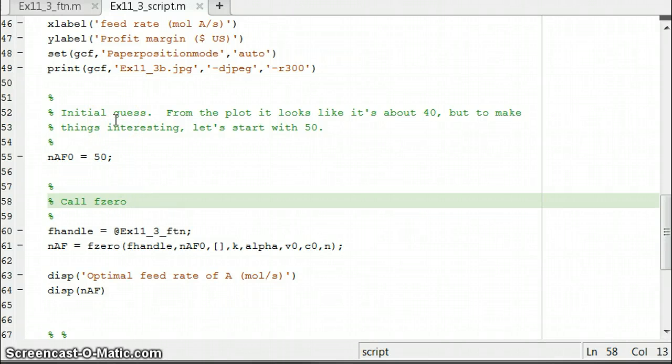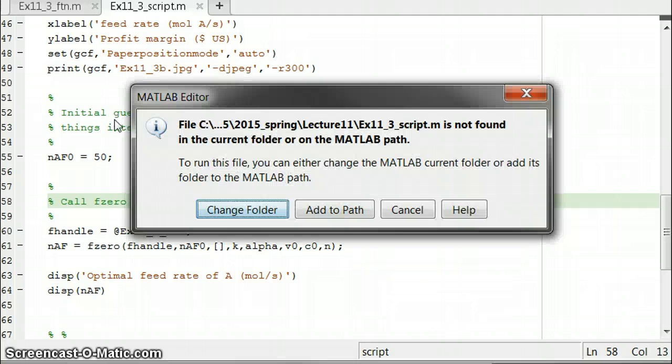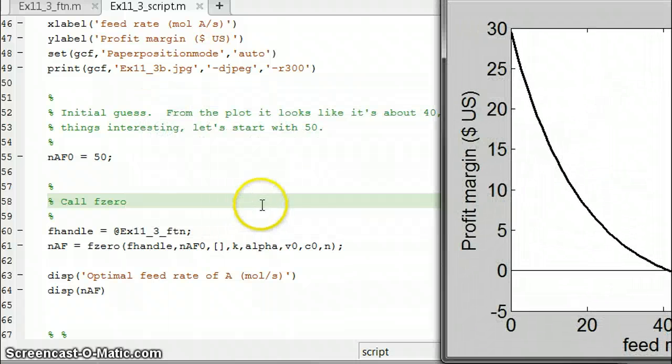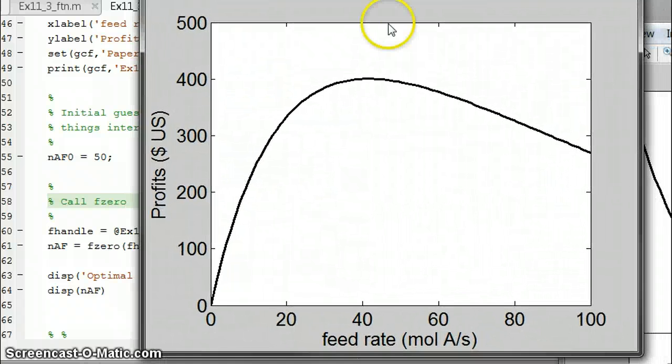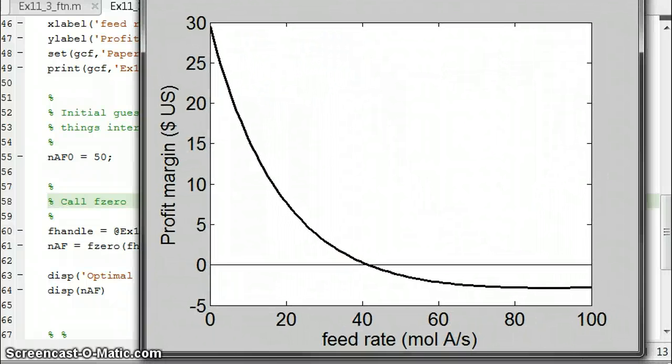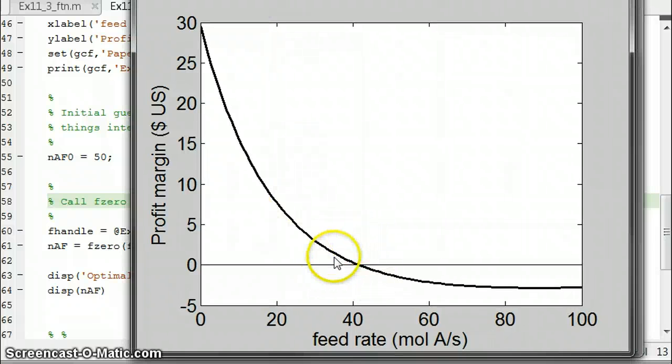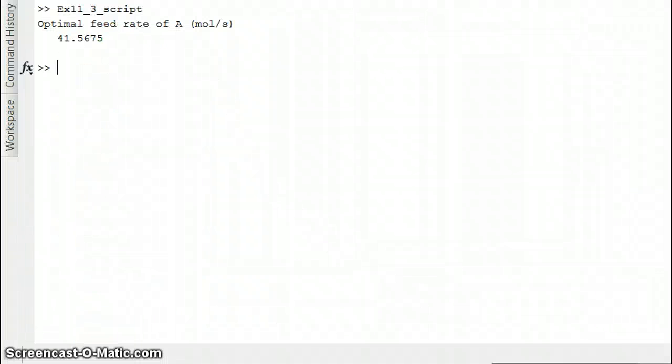So run the script. And the two figures that pop up first, you have the one that I already showed you, where here's the profit function, it looks like the maximum is about here. Here's the derivative of the profits function, which again is concurrent with that, showing where the maximum is going to be. And then MATLAB spits out what the actual optimal feed rate is, about 41 moles per second.